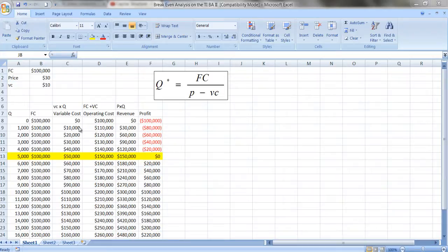And the more you produce, the more it's going to cost you. So you can see these numbers go up. The total operating costs are going to be fixed costs plus variable costs. So if you don't produce anything, it's $100,000. If you produce 1,000 units, it's going to be $110,000, et cetera.